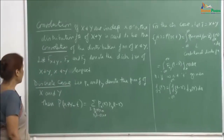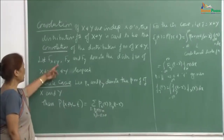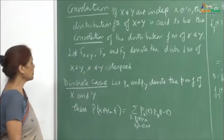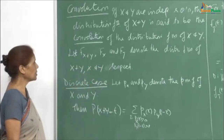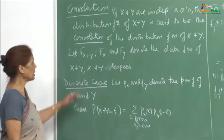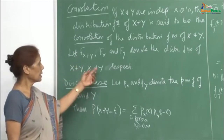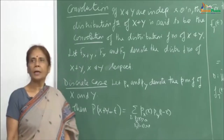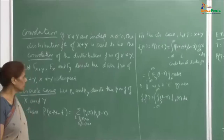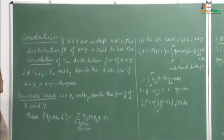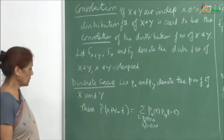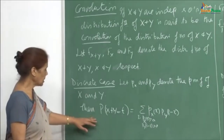Here the definition says that if X and Y are independent random variables, the distribution function of X plus Y is said to be the convolution of the distribution functions of X and Y. If I let F_{X+Y}, F_X, and F_Y denote the distribution functions of X+Y, X, and Y respectively, then by notation it is clear that F_{X+Y} is the distribution function for X+Y, F_X is for X, and F_Y is for Y. Now, for the discrete case the definition would be as follows.